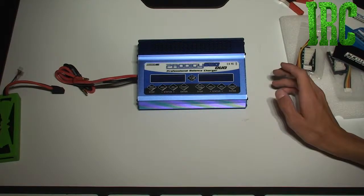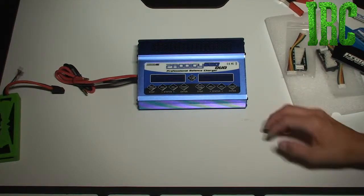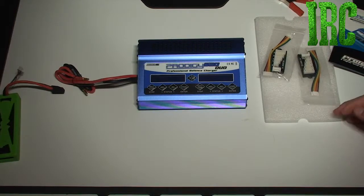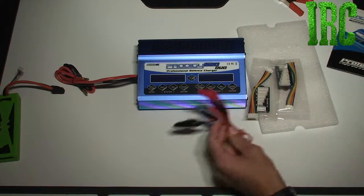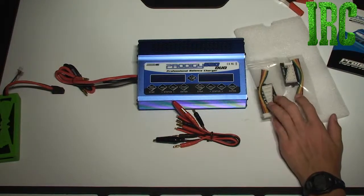It's got a ton of settings, which I'll go over in the next video - the review and how-to's. So there's the Prodigy 620 Duo. You'll need to solder on your own connectors, and it comes with two balancing boards.